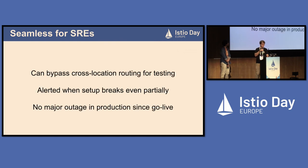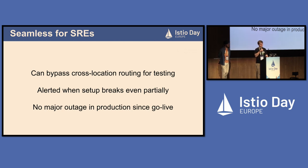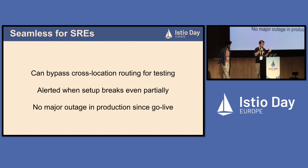For SREs: cross-location routing can be bypassed easily for testing, thanks to the internal hostnames. Thanks to the black-box testing, we are alerted when the setup breaks even partially. We've had no major outage due to this system in production since go-live.